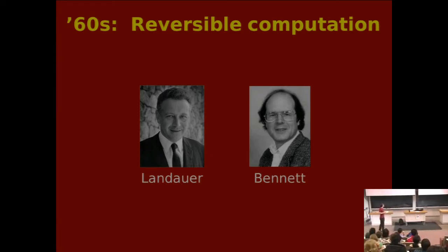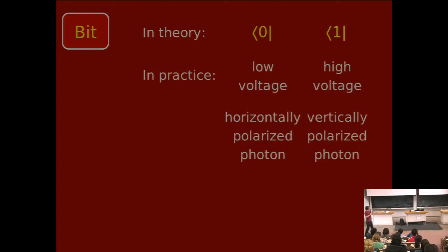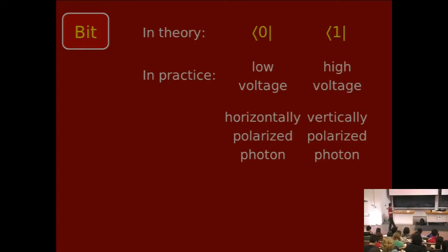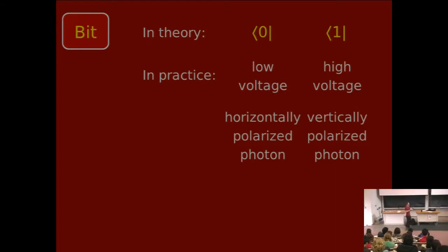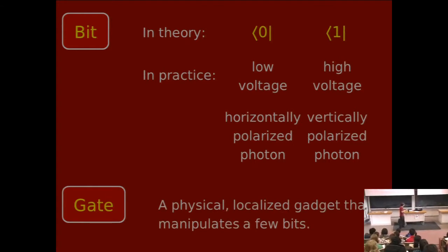Let's talk about bits for one second. Bits, in theory, are just symbols — 0 and 1. In practice, maybe you make the wires with low voltage or high voltage, or maybe you use photons to represent your bits, horizontally polarized versus vertically polarized ones. You have some kind of physical scheme for it in real life. A gate is also a physical gadget that manipulates its few physical bits. So there's a theoretical version and a physics version.